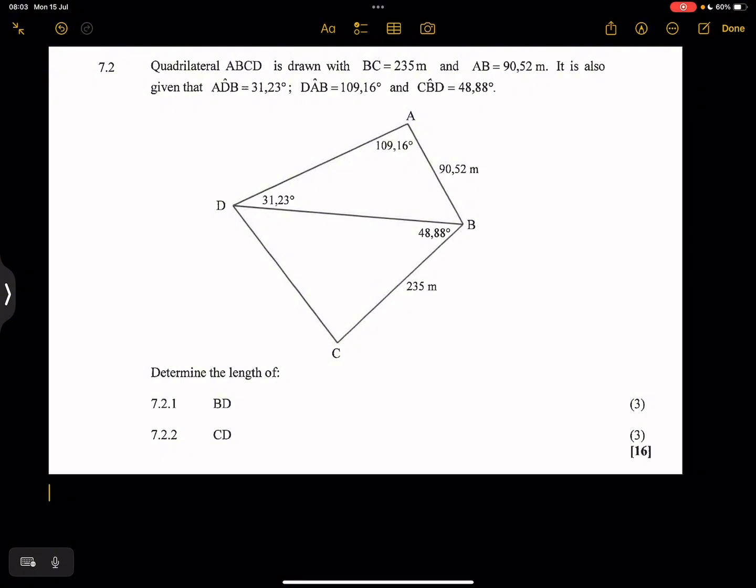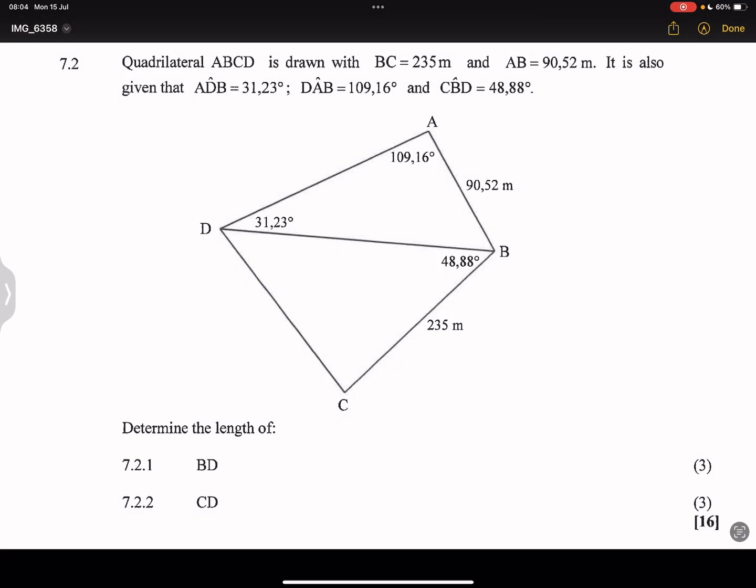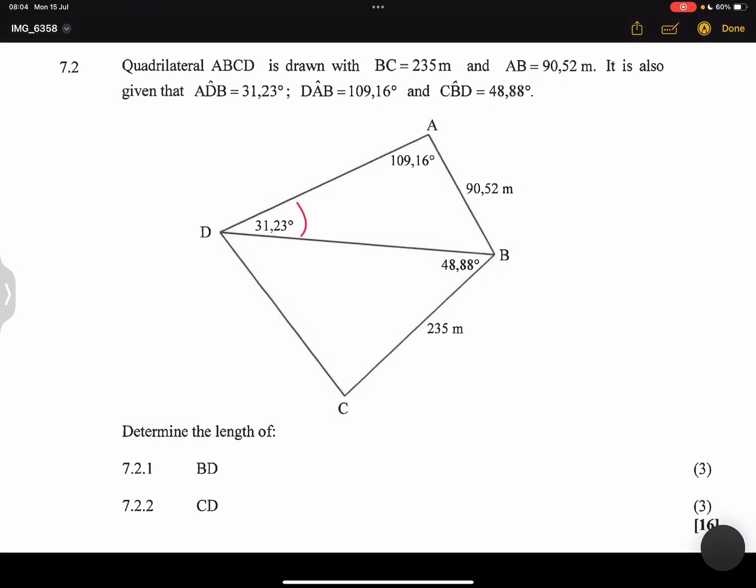So they say we've got quadrilateral ABCD, which is drawn. We've got BC, which is 235. We've got AB, which is 90.52. It's also given that angle ADB is 31.23, angle DAB is 109.16, and angle CBD is 48.88. Now they say to us, determine the length of BD. So we're looking for the length over here.